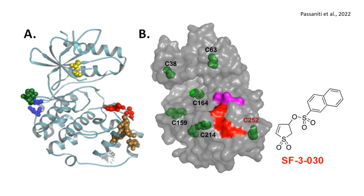By selectively inhibiting F-site interactions, SF-3-030 impairs oncogenic signaling while allowing normal ERK function, paving the way for safer and more effective cancer therapies. Future studies will focus on combination therapies with BRAF and MEK inhibitors to enhance treatment efficacy and overcome resistance mechanisms in MAPK-driven cancers.